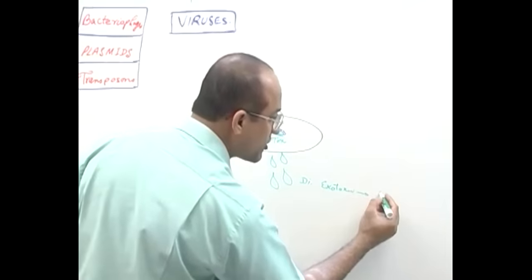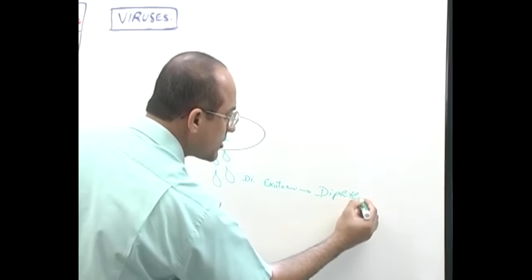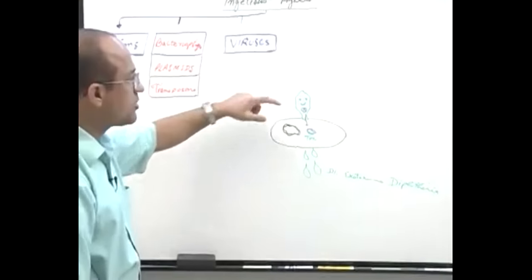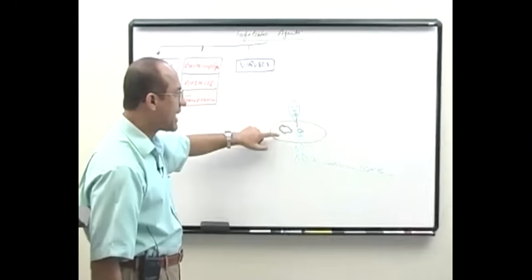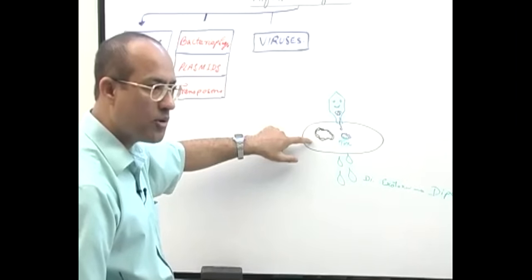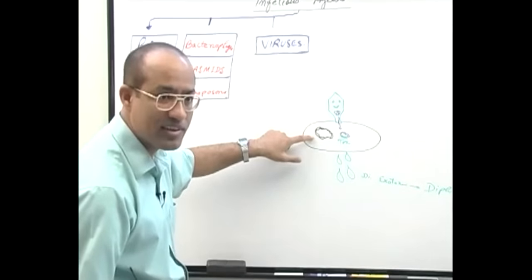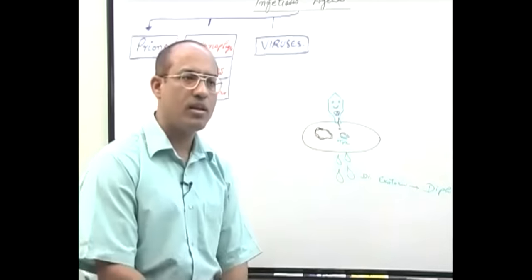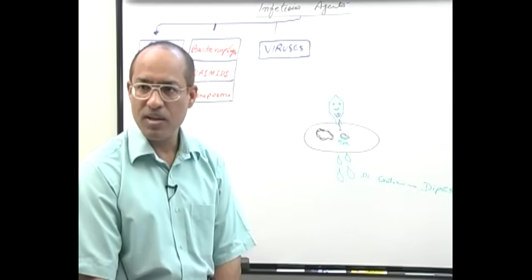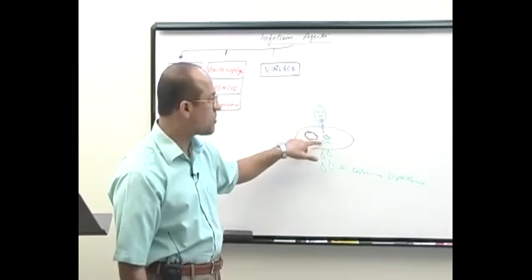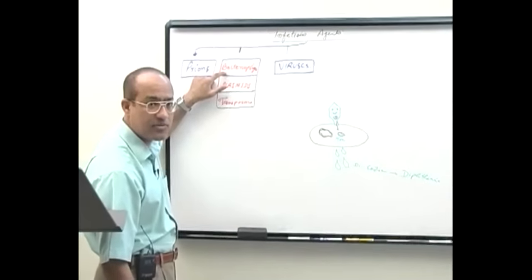When the tox gene expresses itself, a special protein is produced and secreted — diphtheria exotoxin — which produces damage in tissue and causes the disease diphtheria. If the bacteriophage's genetic material is not present, the bacterium cannot produce diphtheria toxin. Therefore, only those Corynebacterium diphtheriae rods that carry this bacteriophage genetic material are toxic.